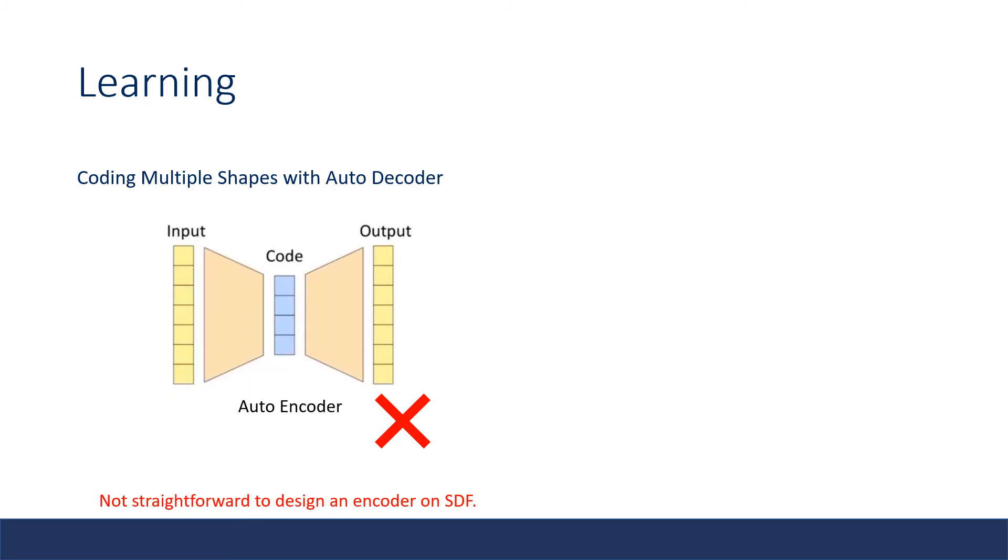One approach is to train an autoencoder such that the latent space of the bottleneck layer will automatically be the shape code. However, the authors claim that it is not straightforward to design an encoder on SDF. Also, since only decoder is retained for inference, it is unclear whether using an encoder is the most effective use of computation resource during training.